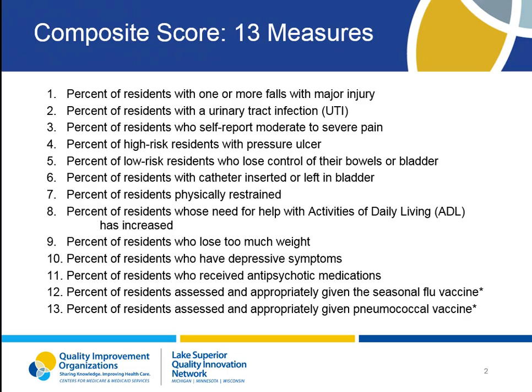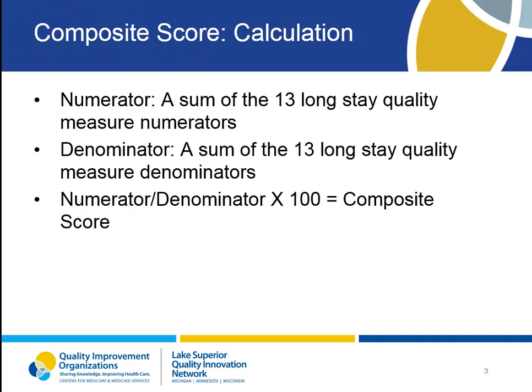These are the 13 long-stay measures that determine the Composite Score. The Composite Score is calculated by summing the 13 long-stay quality measure numerators to obtain the Composite Score numerator, summing the 13 long-stay quality measure denominators to obtain the Composite Denominator, and then dividing the composite numerator by the composite denominator and multiplying by 100.